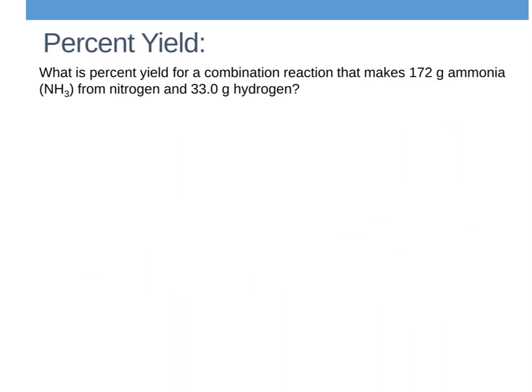So let's look at this problem. What's the percent yield for a combination reaction that makes 172 grams of ammonia from nitrogen and 33.0 grams of hydrogen? So I've got my percent yield. So I'm looking for my actual. Actual, if I can spell, which I can't. Actual over theoretical times 100.